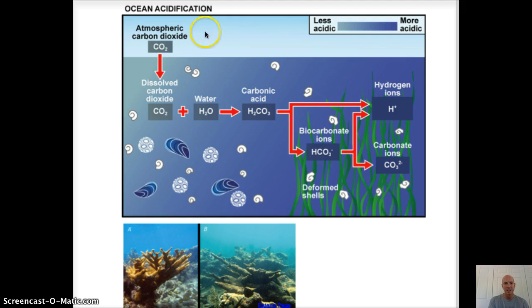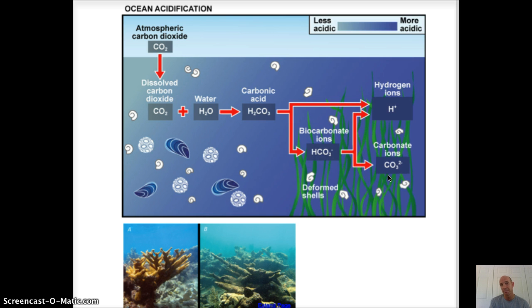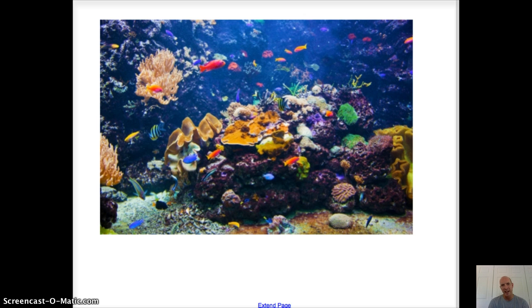Ocean acidification is an important concept — definitely write that down. CO2 and water turn into carbonic acid. An acid is anything that releases a hydrogen ion, and you're changing the pH of the ocean; the pH is dropping. That's a big deal because acid reacts with calcium carbonate, weakening the shells of shellfish like lobsters and clams, and it bleaches out the coral in coral reefs. Coral reefs are biodiversity hotspots in the ocean, and if we harm the reefs through ocean acidification, all the life connected to those reefs will suffer. We are losing our coral reefs and we should be alarmed about that.